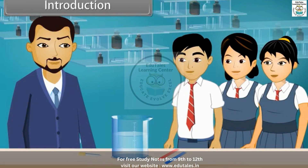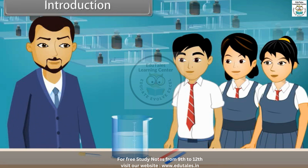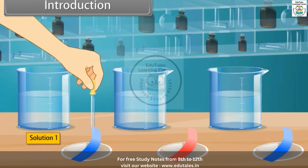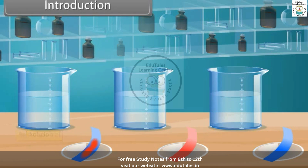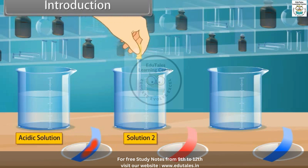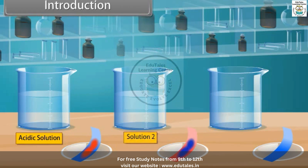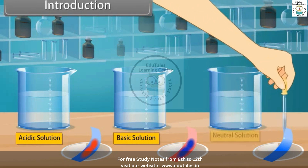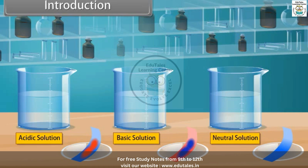Hello students. Good morning. Today we will perform an experiment to identify acidic, basic, or neutral solutions. First, put a drop of solution 1 on the blue litmus paper — it turns into red, showing acidic behavior. Next, put a drop of solution 2 on the red litmus paper — it turns into blue, showing basic behavior. Finally, we test solution 3 — the color is not changing, showing that this solution is neutral.